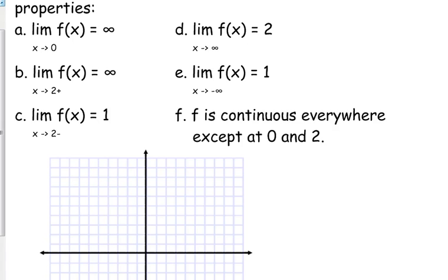As I approach infinity, on the right side of my graph, I'm headed towards two. As I'm approaching negative infinity, I'm headed towards one, and then it tells me that my function is continuous everywhere except at zero and at two. So, let's start to put these together here.